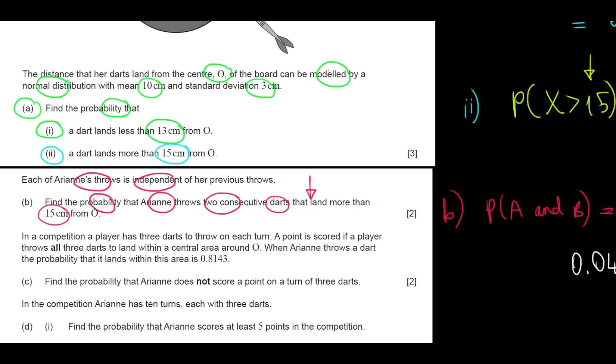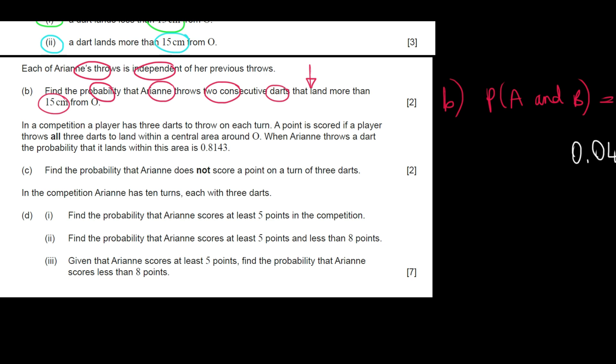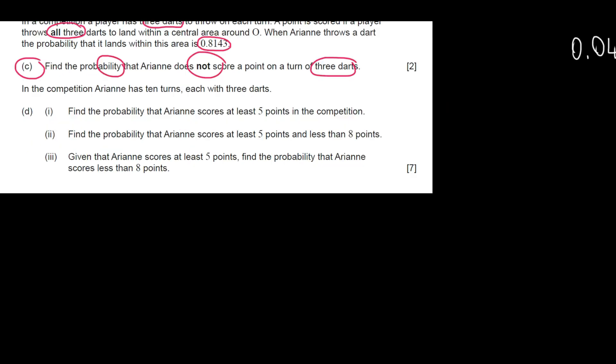That concludes one more exercise. Then we would go to C. Here's what we have at C: In a competition, a player has three darts to throw on each turn. A point is scored if a player throws all three darts to land within a central area round O. When Ariane throws a dart, the probability that it lands within this area is 0.8143.